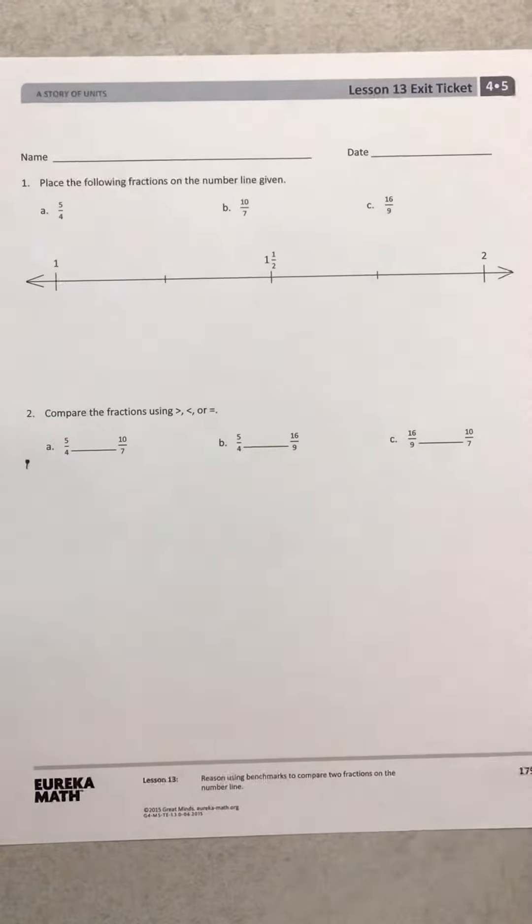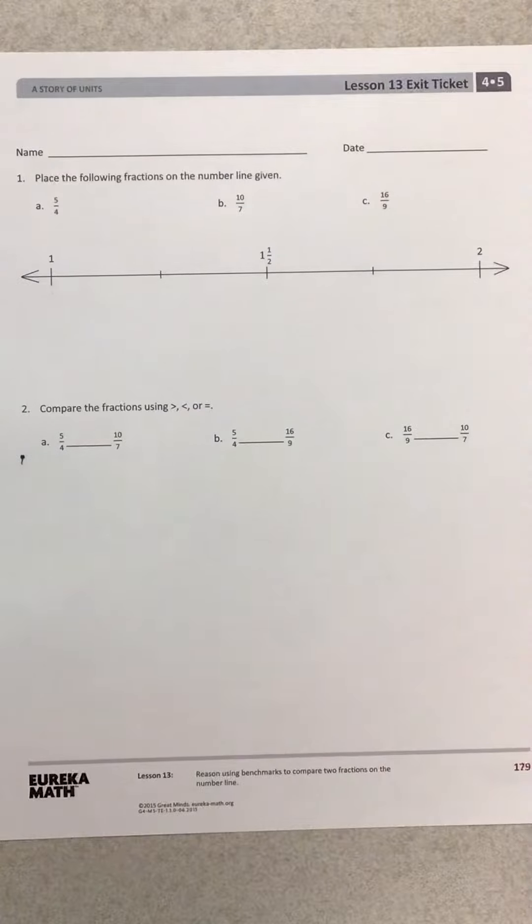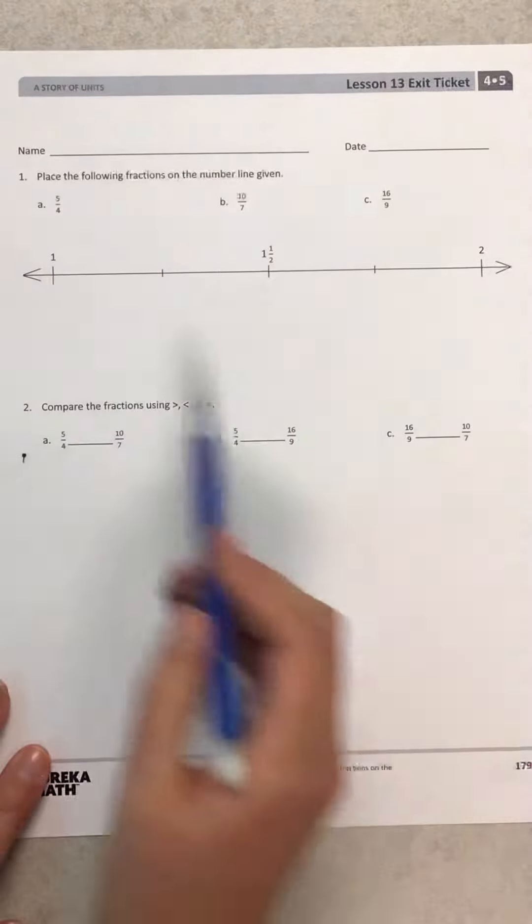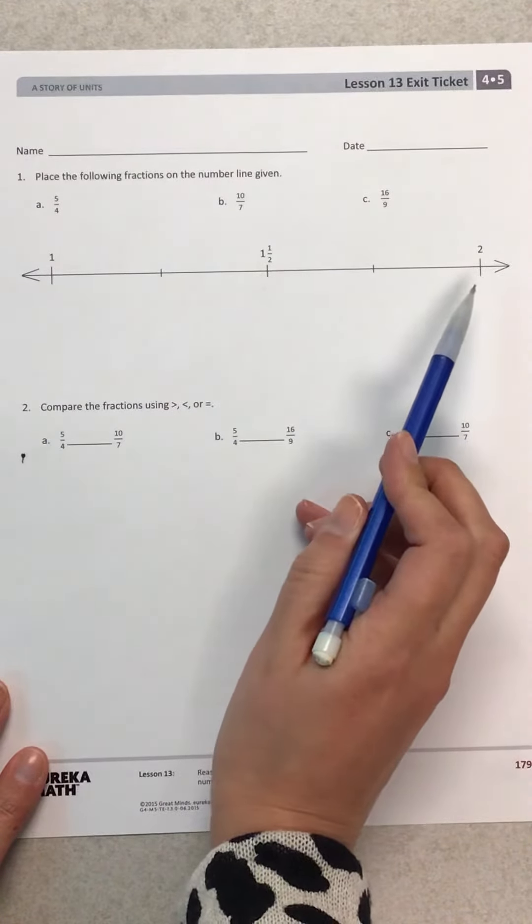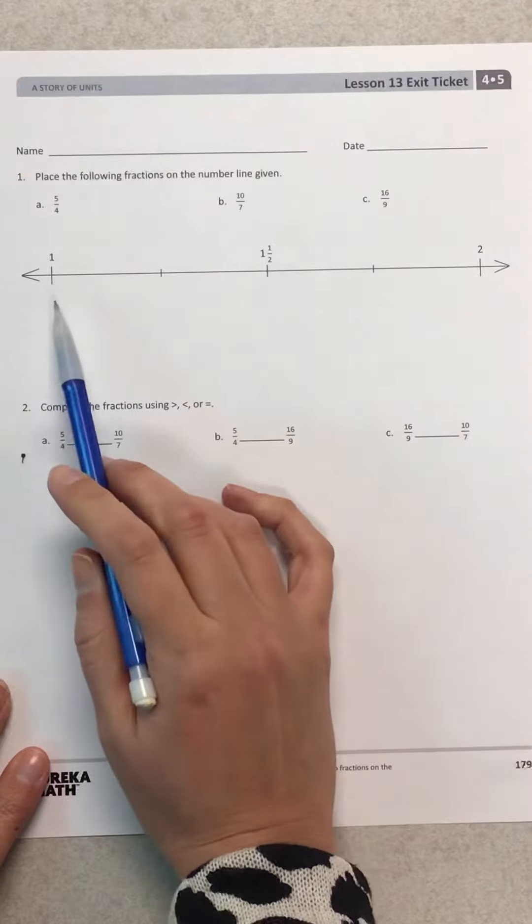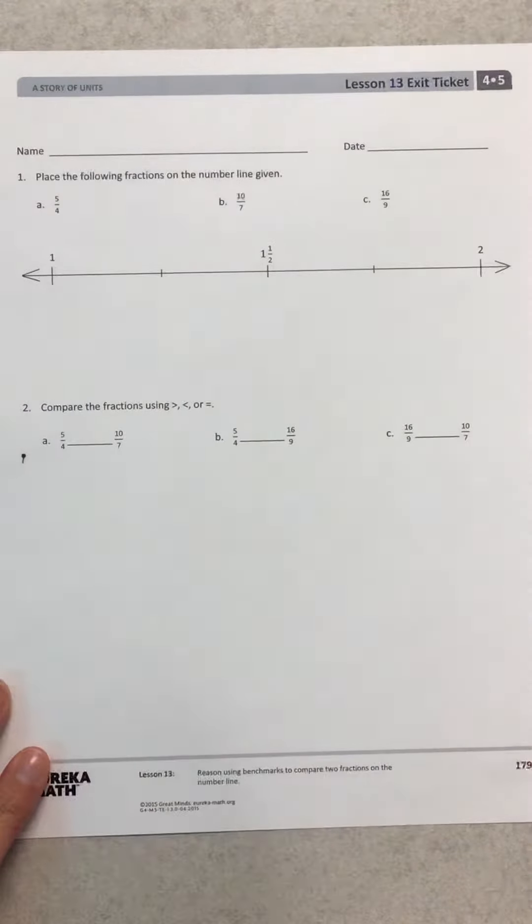Hi, fourth graders. We are ready for lesson 13's exit ticket on page 179. Today we looked at fractions and we are comparing them on our number line to 1, 1.5, and 2. And so because we know that these fractions are going to be greater than 1, we're going to break them up into those number bonds.